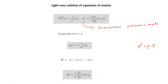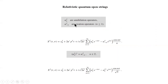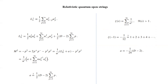We were talking about the transverse Virasoro mode, and we had computed the mass-square. These were computed in terms of these coefficients. Now that our coefficients have become operators, the transverse Virasoro mode and the mass-square are now going to become operators as well. This is an operator and the mass-square also becomes an operator.